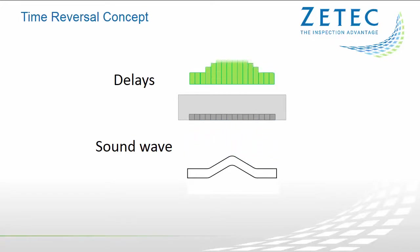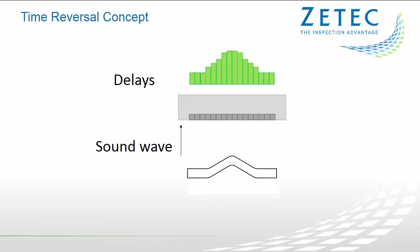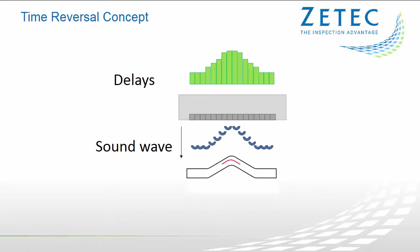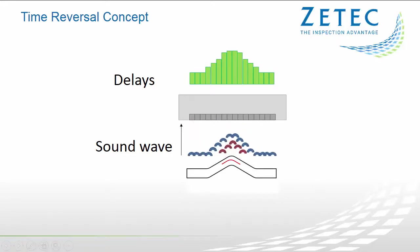The second step is to record data using the delays obtained during the profiling phase. Data acquisition is performed using electronic linear scanning with a limited active aperture. The complete process is performed in real-time at each scanned position and can maintain a scanning speed similar to standard phased array UT when using equivalent UT settings.